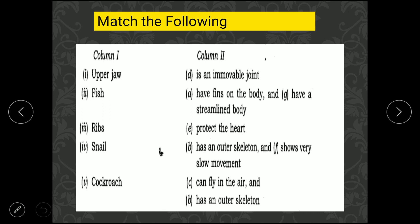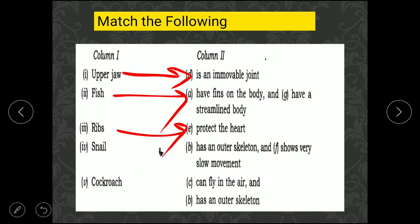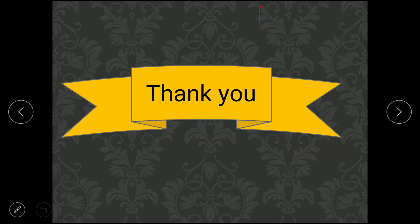In the matching exercise: the upper jaw is an immovable joint. Fish have fins and a streamlined body. Ribs protect our heart and lungs. The snail has an outer shelter and shows very slow movement. The cockroach can fly in the air and has an outer shell. Our chapter is now complete. If you have any questions, please comment. Like the video and subscribe to our channel. Thank you so much — stay home, stay safe, bye.